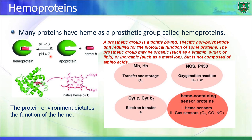Myoglobin and hemoglobin are holo proteins; specifically, they belong to a large group of proteins known as hemoproteins because they have a heme group associated with them. This heme group is an organic molecule. Hemoproteins include a large number of proteins: electron carriers in the electron transport chain, sensor proteins such as gas sensors, and enzymes like the cytochrome P450 enzymes.